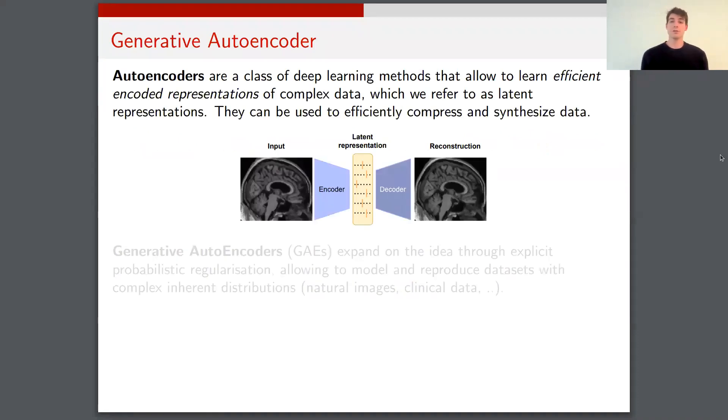First, what is a generative autoencoder? Well, autoencoders are a class of deep learning models that try to map complex input data into a much lower dimensional space called the latent space. The main idea is to learn a latent representation, so a lower dimensional representation, of those input data.